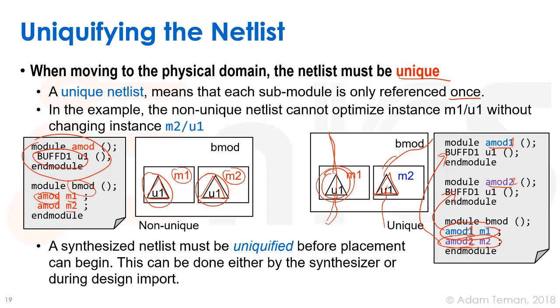Usually uniqueification is done inside the synthesis tool, so most netlists reaching place-and-route are already unique. But we need to check this — the place-and-route tool can uniqueify if needed.